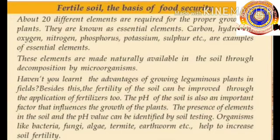The first topic is fertile soil — the basis of food security. About 20 different elements are required for the proper growth of plants; they are known as essential elements. Carbon, hydrogen, oxygen, nitrogen, phosphorus, potassium, sulfur, etc. are examples of essential elements. These elements are made naturally available in the soil through decomposition by microorganisms.